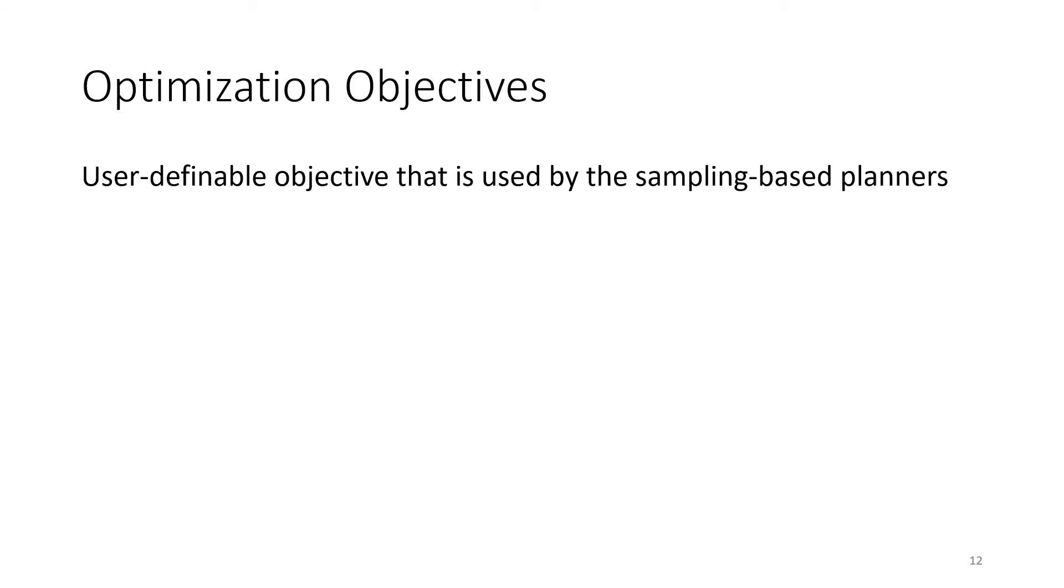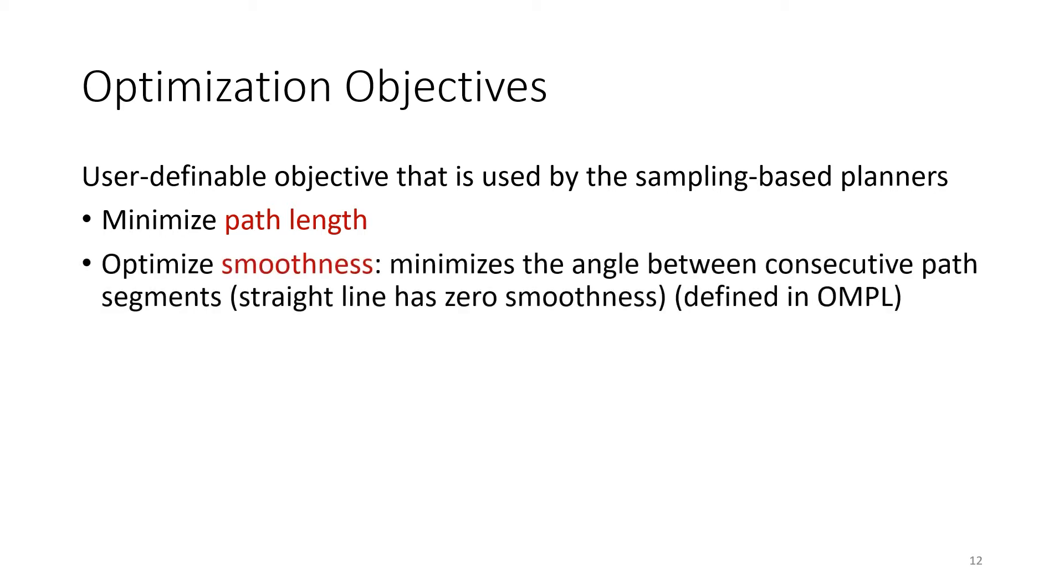By default, the motion planners try to minimize the path length while searching for a feasible solution. Optionally, the user can also select other optimization objectives, such as smoothness, where the angle between consecutive path segments is kept as small as possible.